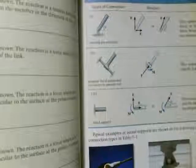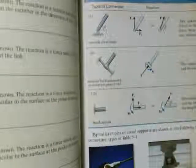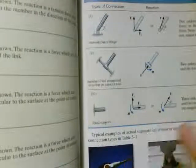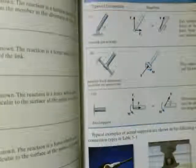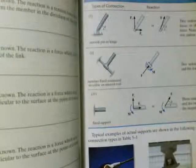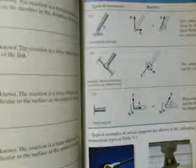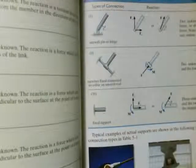So if you're ever confused when you're looking at a problem, come back to this table because most likely the problem will have stated it's a weightless link or it's a roller, it's a rocker. And you can see what type of force that's going to be exerted.